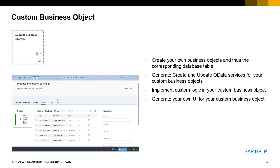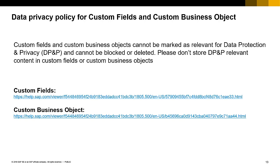SAP provides a variety of business objects; however, in some cases it may be necessary to create your own custom business objects. SAP allows this through our Custom Business Objects application. You'll be able to create your own business objects, which will also create a database table, generate and update OData services for your custom business object, implement custom logic, and even generate your own UI. Please keep in mind that custom fields and custom business objects cannot be marked as relevant for data protection and privacy, so it is not recommended to store sensitive data within them.